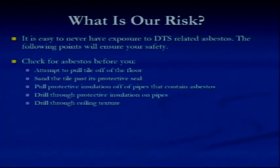Pull protective insulation off of pipes that contain asbestos. We've got those all through the mechanical rooms that Brian's guys know about. They have little elbows and they're easy to knock or take something heavy, you could break that insulation and knock some asbestos loose. So we have all of those labeled like you saw one of those previous labels. Drill through protective insulation on pipes - you don't want to do that for asbestos reasons, and you don't want to hit the pipe once you get inside there. And drill through ceiling texture - don't do that, especially in Mosier.